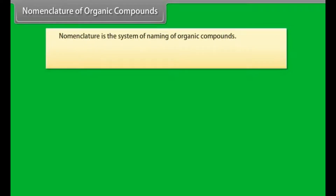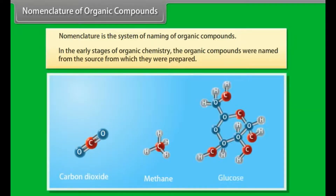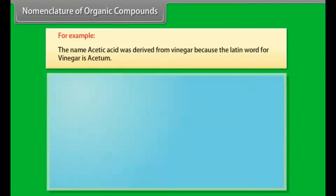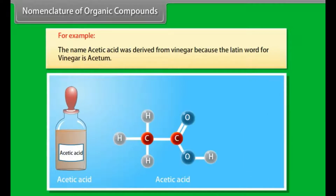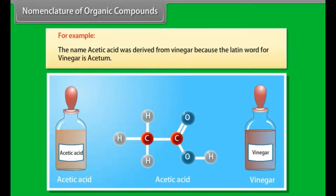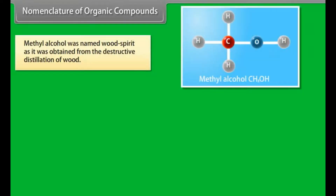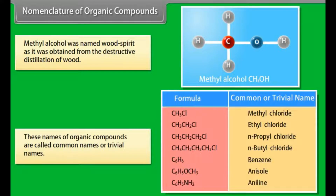Nomenclature is the system of naming of organic compounds. In the early stages of organic chemistry, organic compounds were named from the source from which they were prepared. For example, the name acetic acid was derived from vinegar because the Latin word for vinegar is acetum. Methyl alcohol was named wood spirit as it was obtained from the destructive distillation of wood. These names are called common names or trivial names.